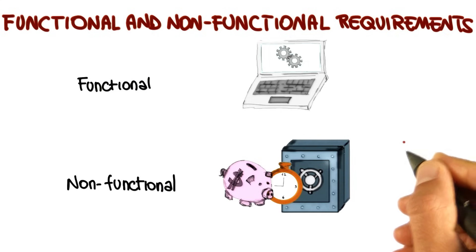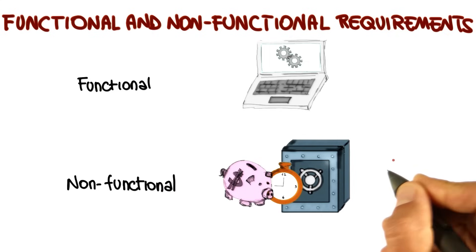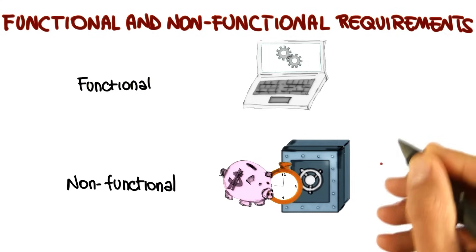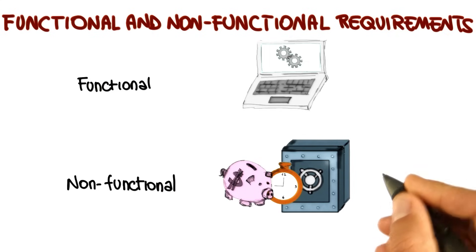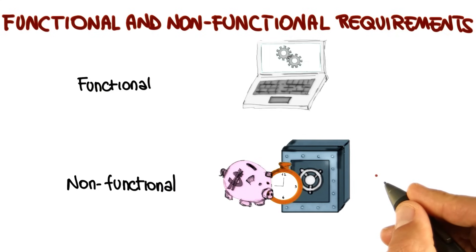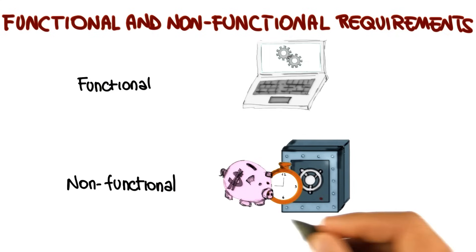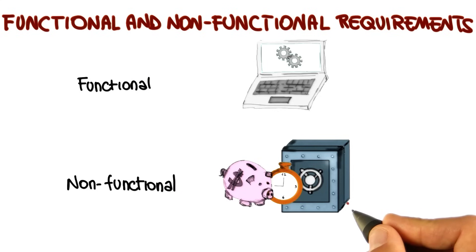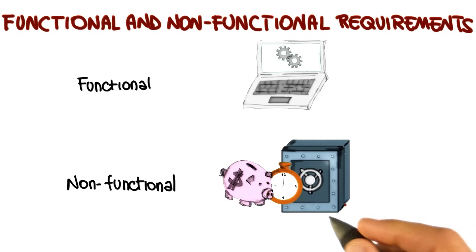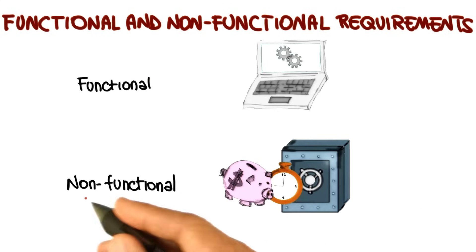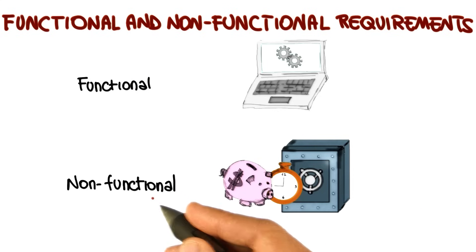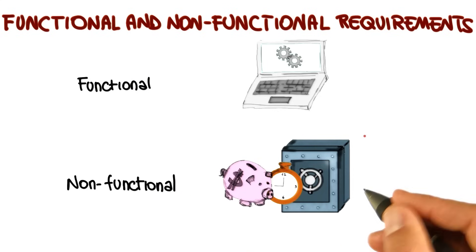For the example just mentioned, for instance, we might say that the elevator must reach the requested floor in less than 30 seconds from the moment when the floor button is pushed. This is still a non-functional requirement, but it is a verifiable one.